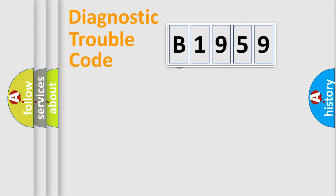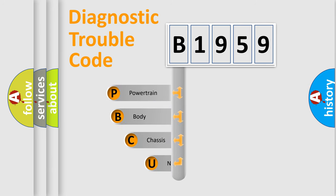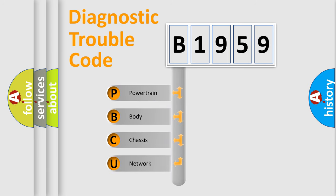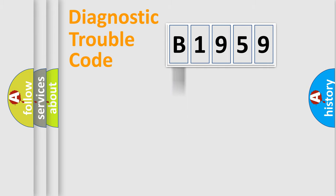Let's look at the history of diagnostic fault code composition according to the OBD2 protocol, which is unified for all automakers since 2000. We divide the electric system of an automobile into four basic units: Powertrain, Body, Chassis, and Network.